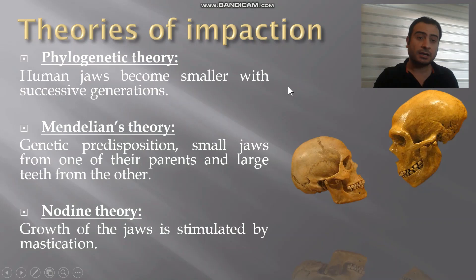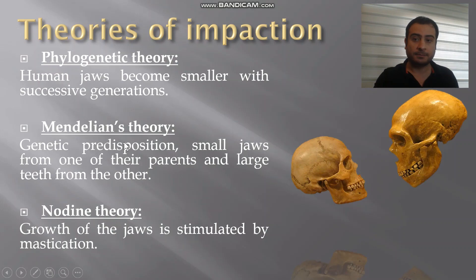We have different theories regarding impactions — these would justify why impactions occur. We have the phylogenetic theory, the Mendelian theory, and the Nodin theory.